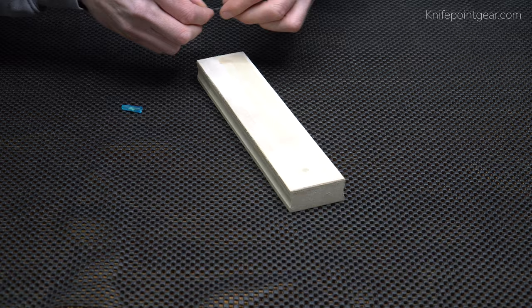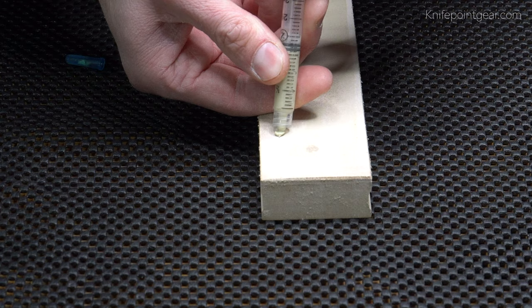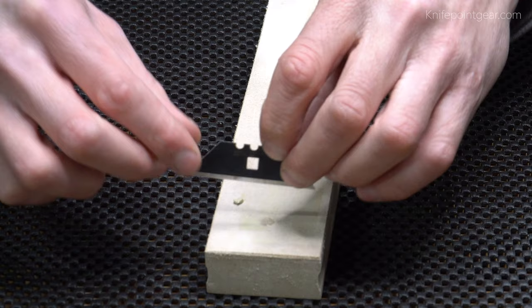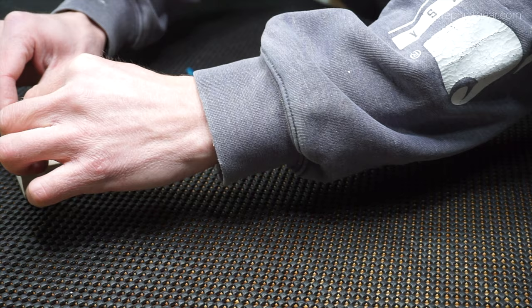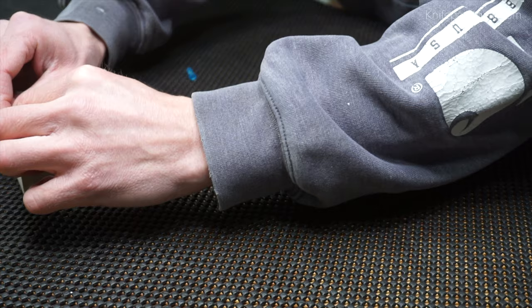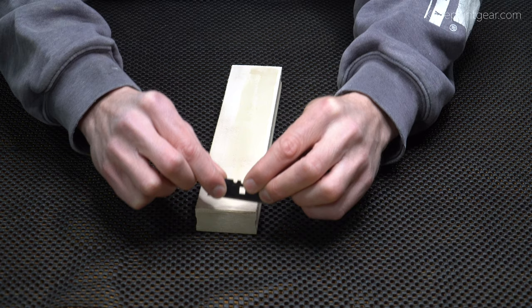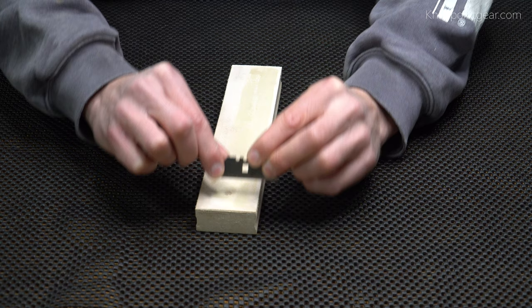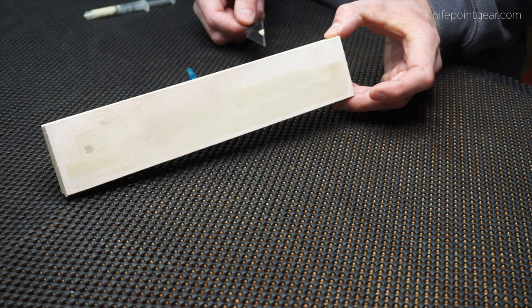Now we can go ahead and apply a tiny bit more here. You don't have to cover the entire surface of the strop right away if you don't want to. Typically, I don't. I typically apply a tiny little bit. Just like we did here. And that is pretty much all I do initially.